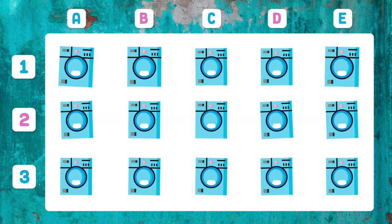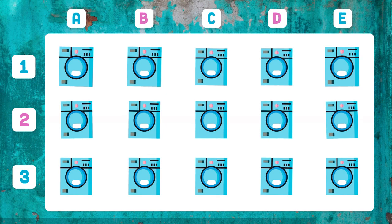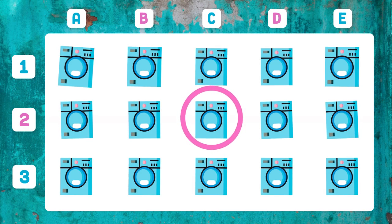Which of these washers is missing something? The washing machine listed in 2C — it is not complete.